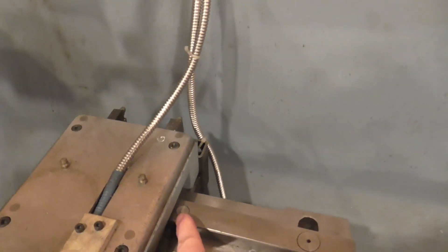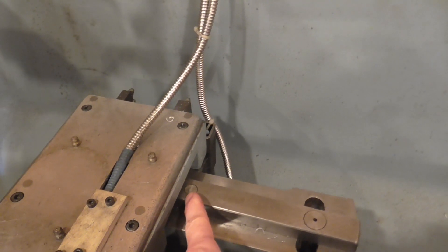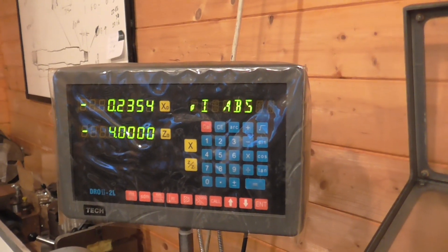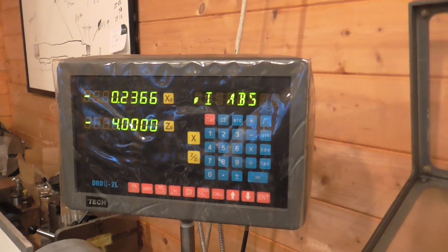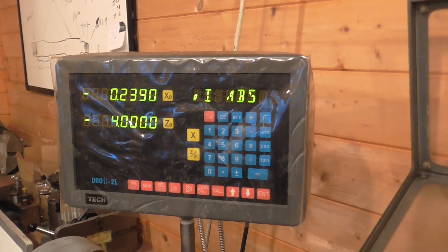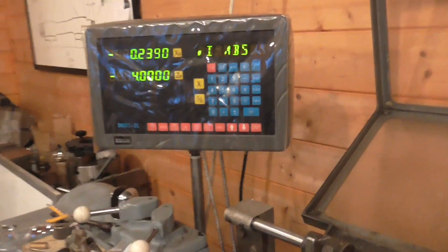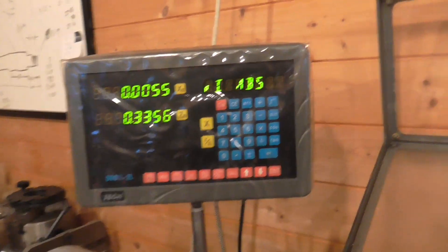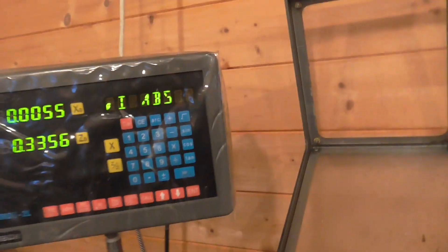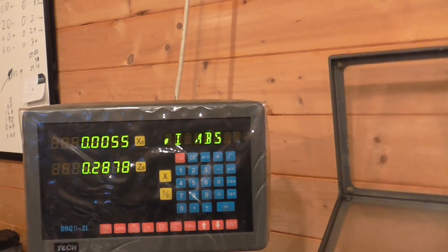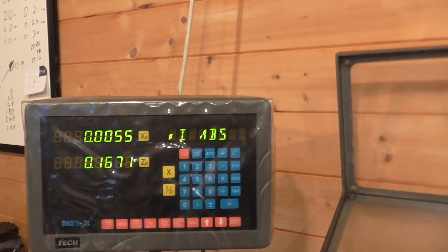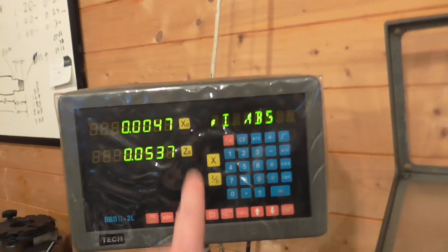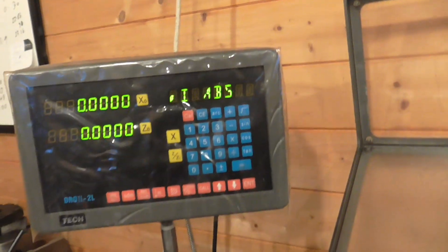We didn't have a zero set directly over the pivot point. So I'm just going to increase this by a few thou. And then we'll reset back to the beginning. I can just again advance until the x-axis starts moving. Zero both.